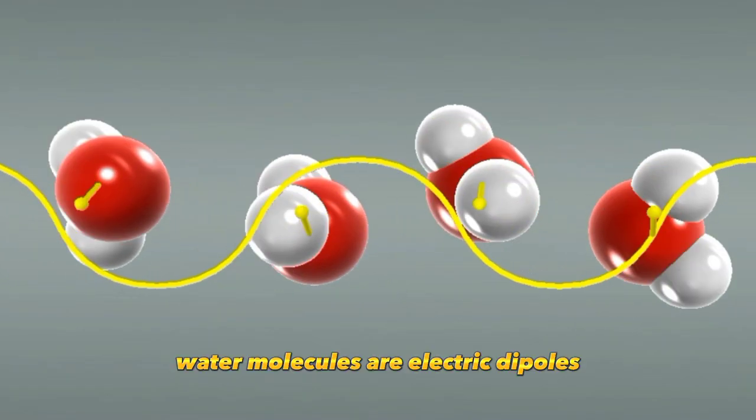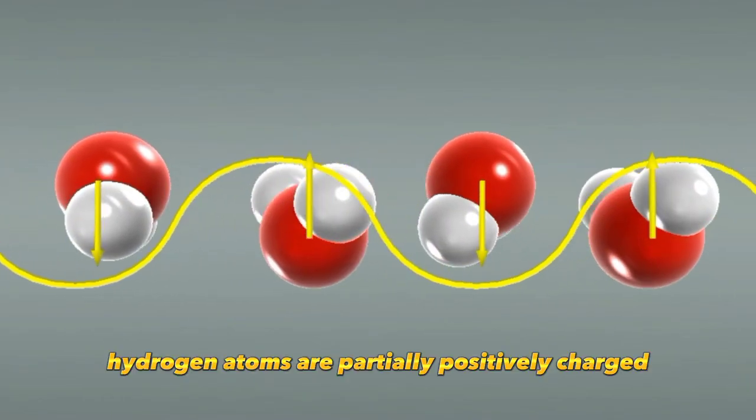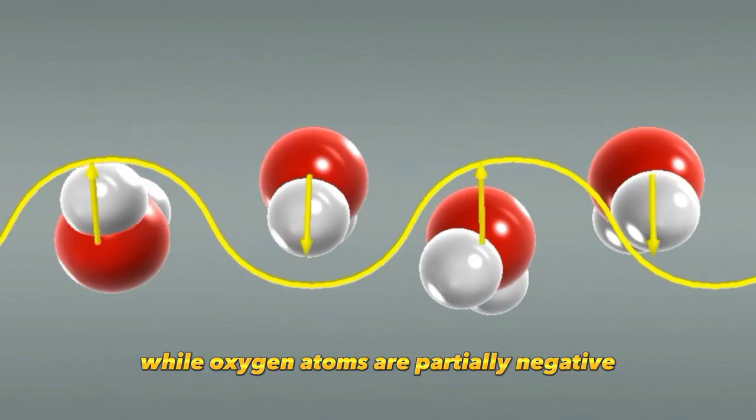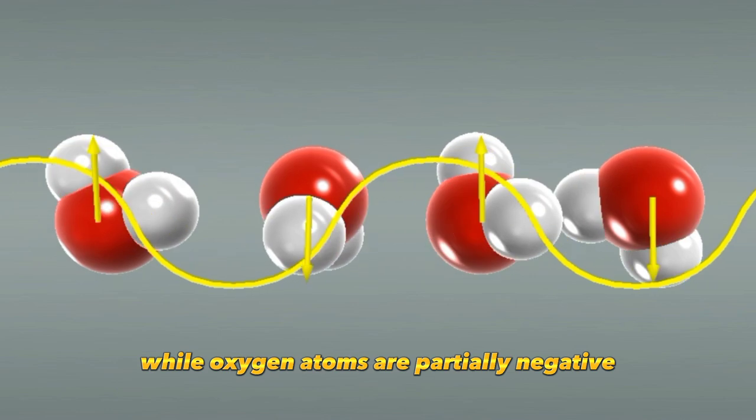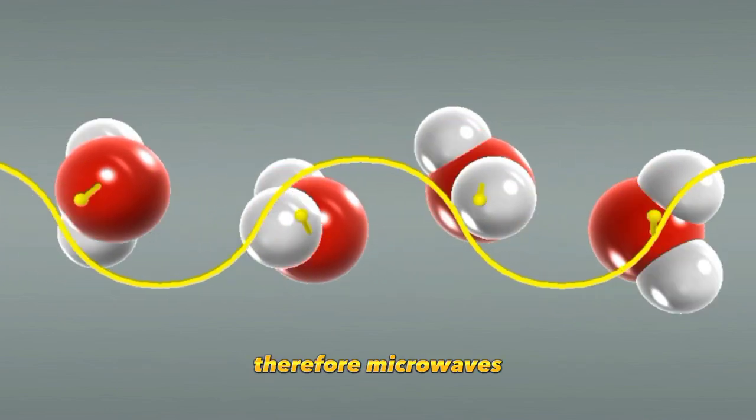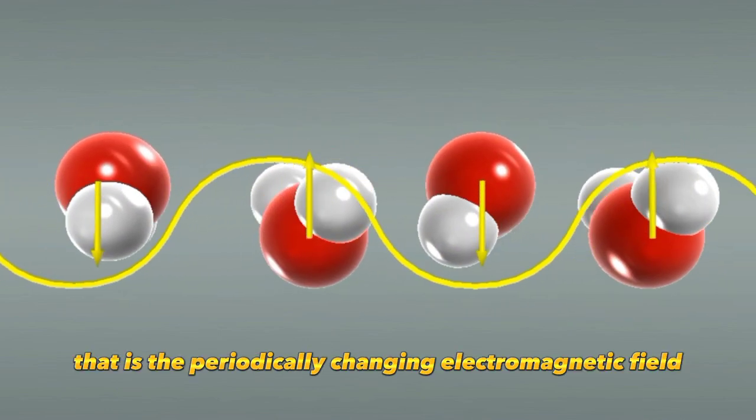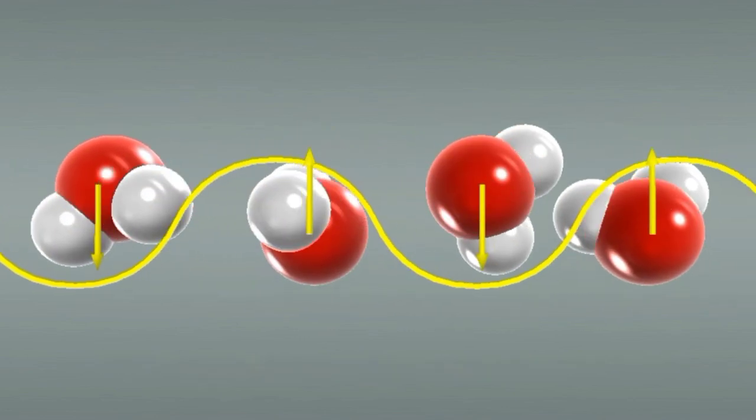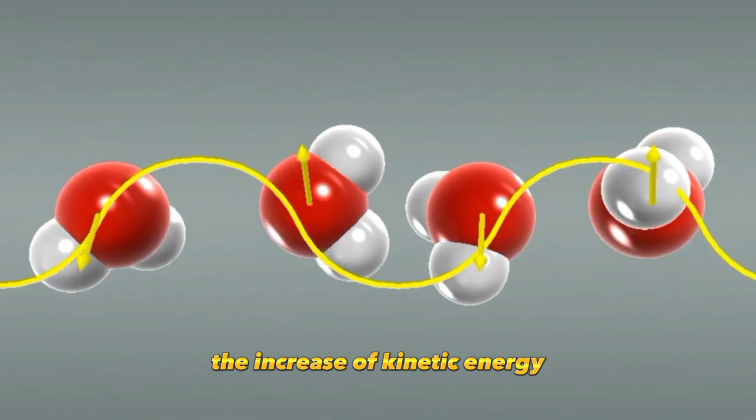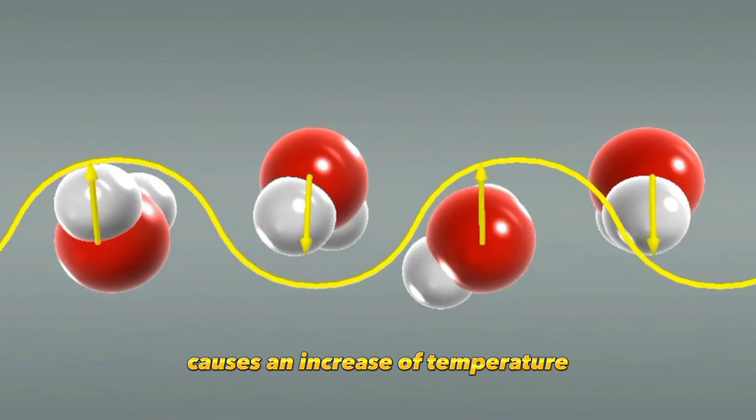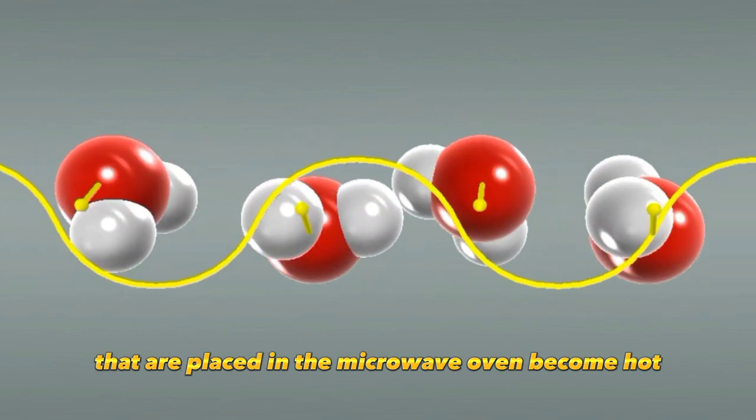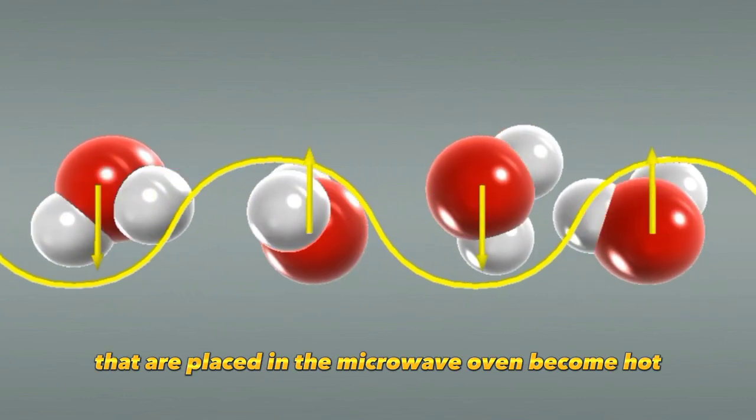Water molecules are electric dipoles. Hydrogen atoms are partially positively charged, while oxygen atoms are partially negative. Therefore, microwaves, that is, the periodically changing electromagnetic field, cause water molecules to vibrate. The increase of kinetic energy causes an increase of temperature. Therefore, water-containing materials that are placed in the microwave oven become hot.